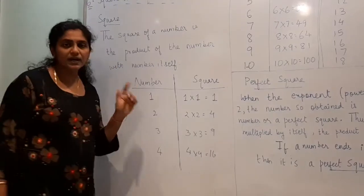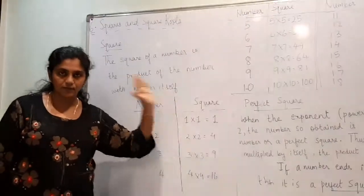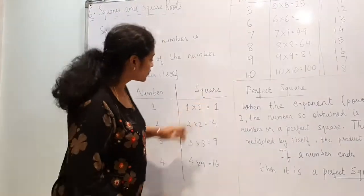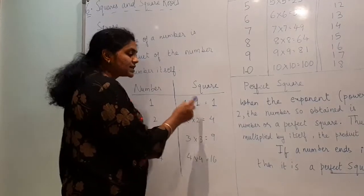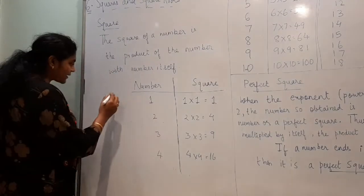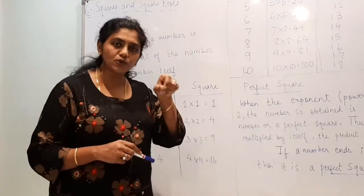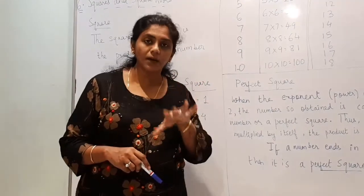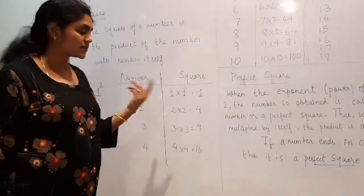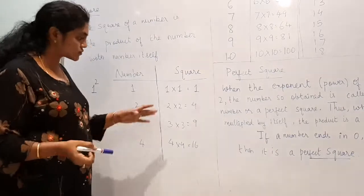Now, what is a square actually? The square of a number is the product of the number with itself. That means if you are taking 1 as a number and you want to find its square, you will multiply 1 with itself — that is 1 × 1 = 1. So I can write it as 1 raised to 2. Whenever there is a power 2 or exponent 2, we call it the square of that number. So 2 squared is 2 multiplied by 2 — multiplying a number with itself is called squaring.